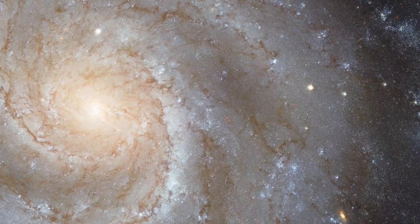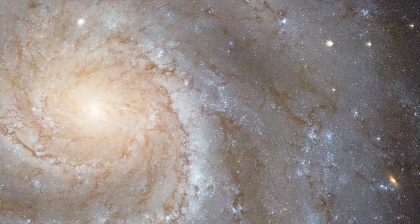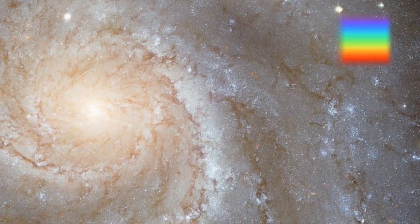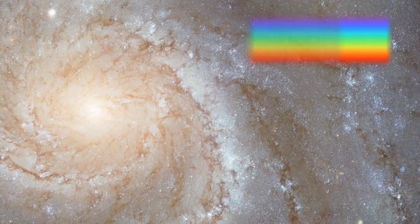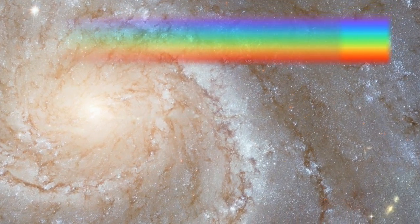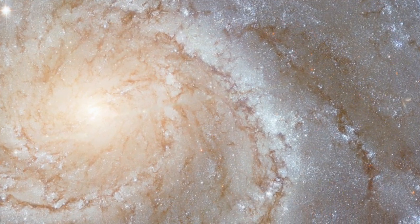In contrast, we might say this Hubble view of M101 is natural color, since it represents the colors more or less the way our eye would see them, assuming we could actually see something so faint and tiny.